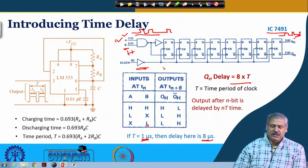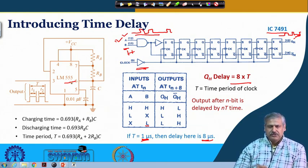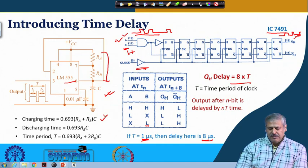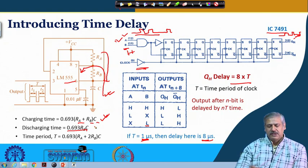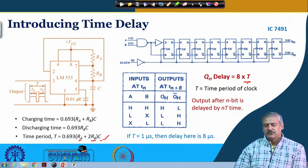One convenient option for generating a clock of different time periods is using IC 555. The 555 timer in astable multivibrator mode charges a capacitor through Ra and Rb, with charging time 0.693 × (Ra + Rb) × C, and discharges with time 0.693 × Rb × C. The total time period is the sum of these. With appropriate choice of Ra, Rb, and C, you can fix the time period T and accordingly introduce the desired delay.